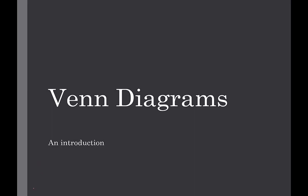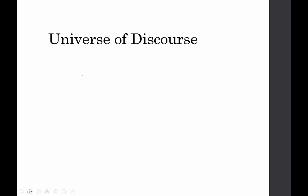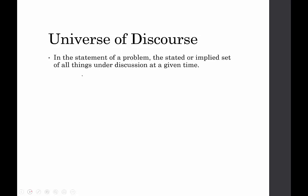Before we get started on Venn diagrams, there's just one definition we need to go over, and that's the definition of the universe of discourse. In the statement of a problem, the stated or implied set of all things under discussion at a given time would be the universe of discourse.